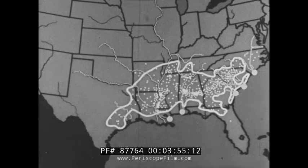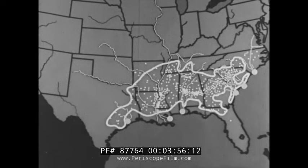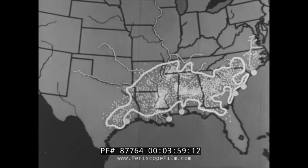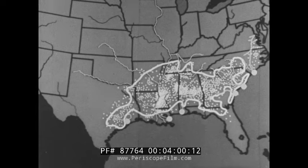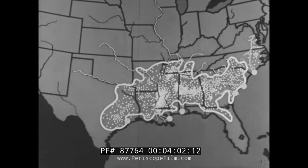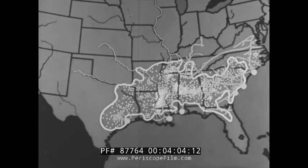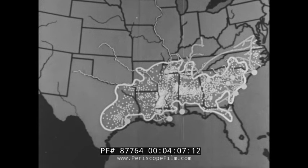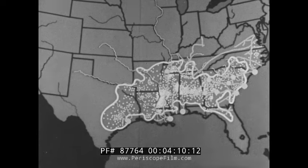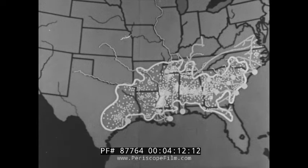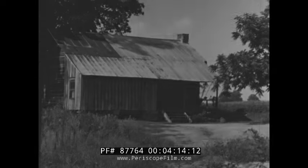Then the railroads opened up areas not served by river boats. Where railroads met, or where they crossed important rivers, other cities grew: Memphis, Atlanta, Columbia, Augusta, Macon, Columbus, Montgomery, and Jackson. All this was before the Civil War.